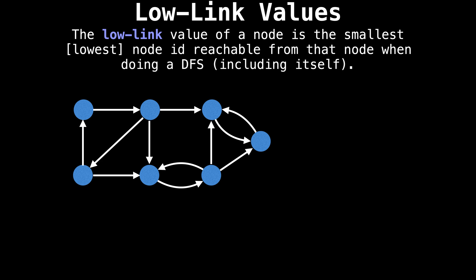To understand Tarjan's algorithm, we're first going to need to understand the concept of a low-link value. Simply put, the low-link value of a particular node is the smallest node ID reachable from that node, including the ID of the node itself. For this to make sense, I'm going to label each of the nodes in our graph by doing a DFS. Suppose we start at the top left corner and label that node with an ID of zero. Now let's explore the rest of the graph and assign IDs to all our nodes.